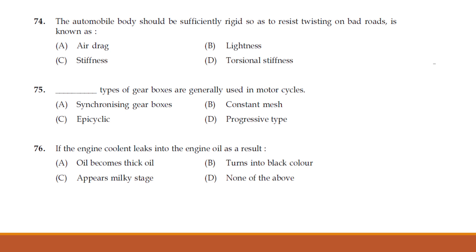The automobile body should be sufficiently rigid so as to resist twisting on bad roads — this is known as torsional stiffness. Option D is torsional stiffness.